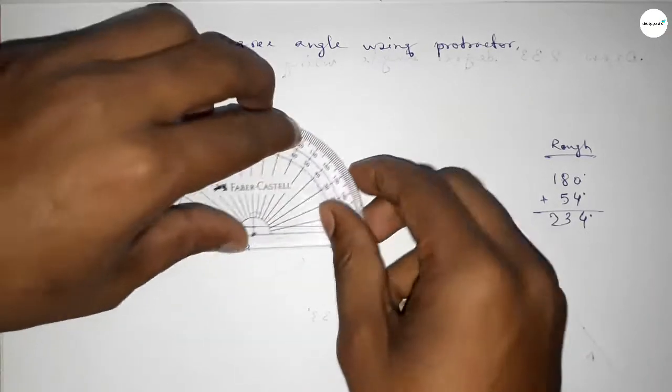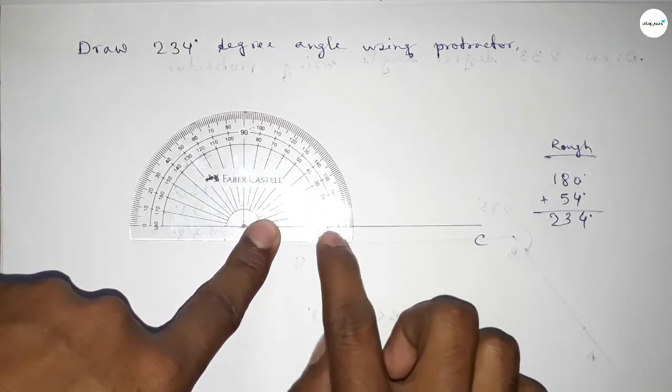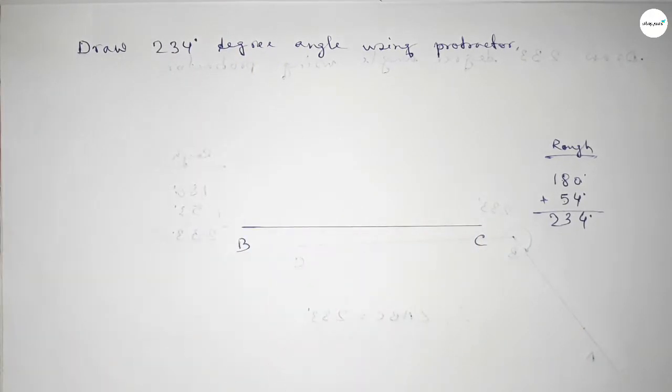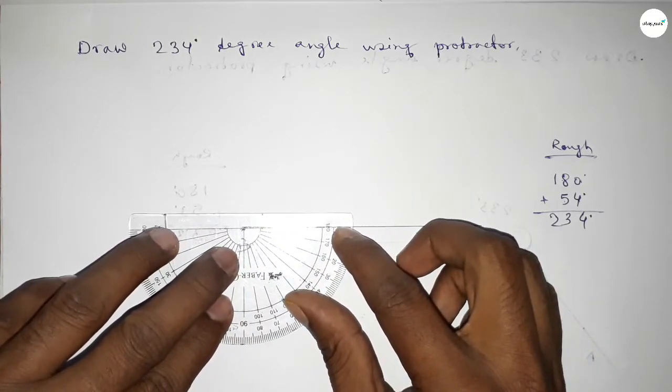First we have to count 180 degree, so putting the protractor on the point B by this way and counting 180 degree. So this is 180 degree, plus putting the protractor on the point B by this way and counting